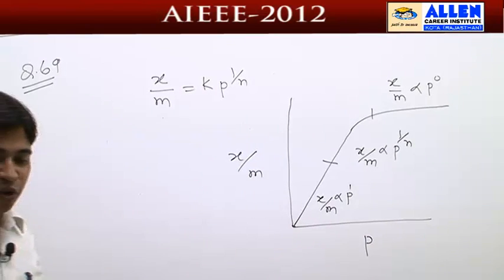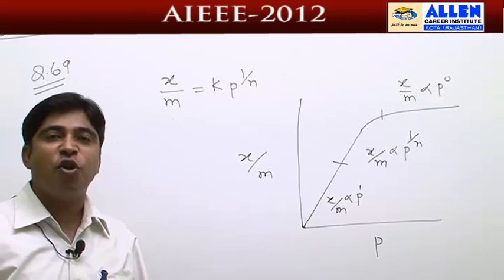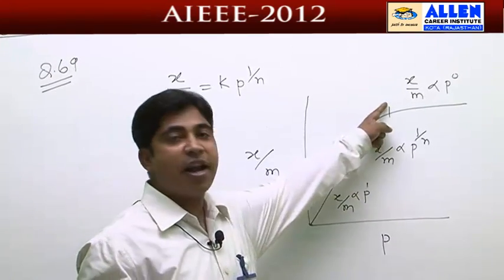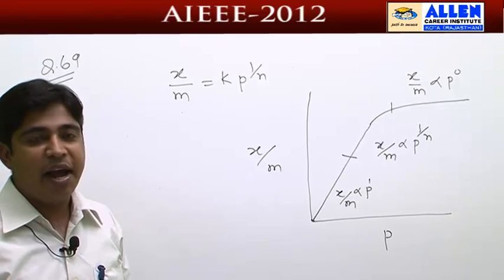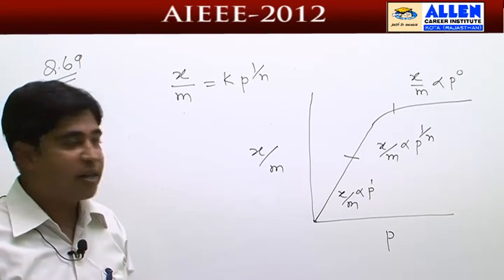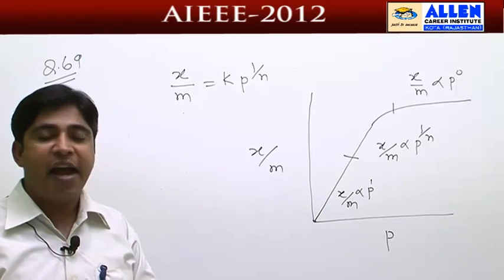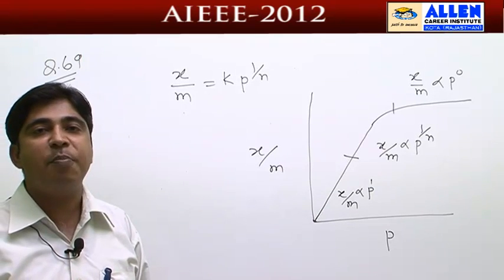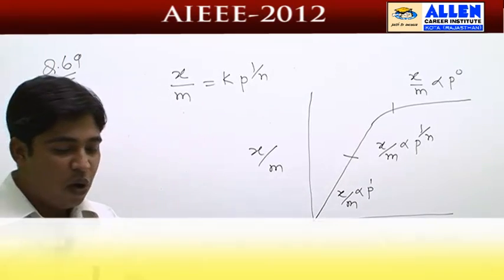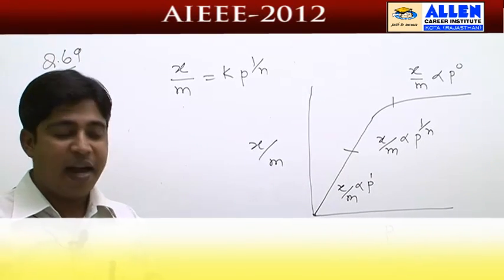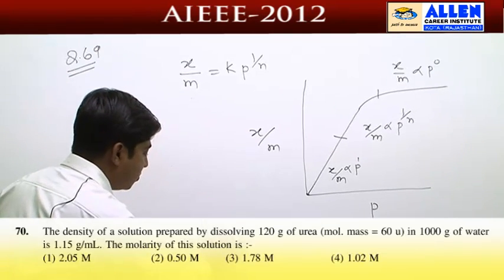According to the question, the first option given is x/m is proportional to p^0, which is correct. The second statement — x/m is directly proportional to pressure — is also correct. The third option — x/m is proportional to p^(1/n) — is also correct. So the answer is the fourth option: all of the above are correct.